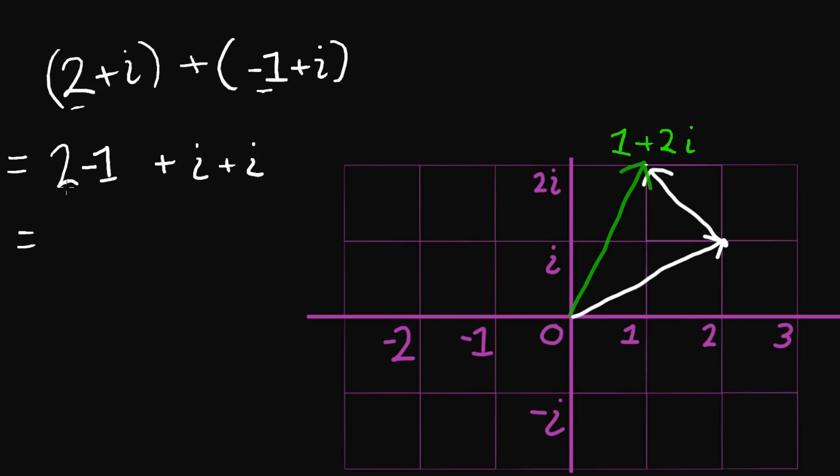And I end up with, well I can just do 2 minus 1, I get 1. And then I can do i plus i, I get 2i. I get the same thing either way.